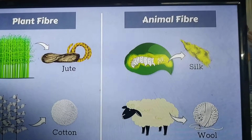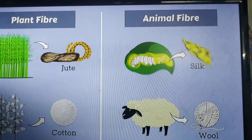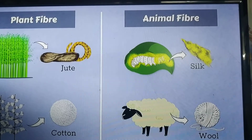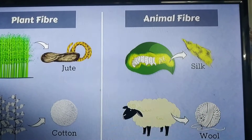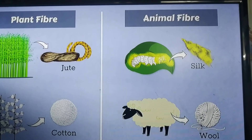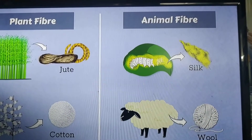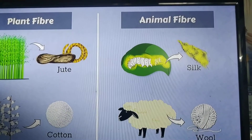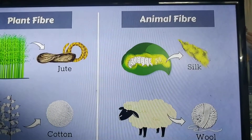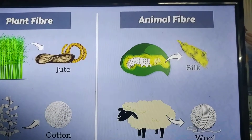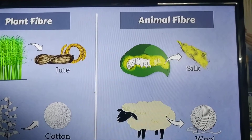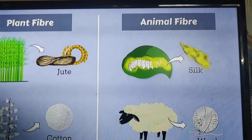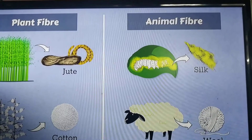Hi children, welcome to science class. Children, what are our basic needs? Food. Second one, clothing. And third one, shelter. Food, clothing and shelter. So about food we learnt already. About clothing we are going to learn.